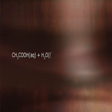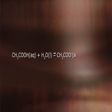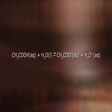Therefore, if we have a solution that contains both acetic acid and sodium acetate, it will be less acidic than a solution that only contains acetic acid of the same concentration. A shift in equilibrium that suppresses the ionization of the acetic acid occurs because of the acetate ions from the sodium acetate. Acetate ion is considered the common ion because it is supplied by both acetic acid and sodium acetate.